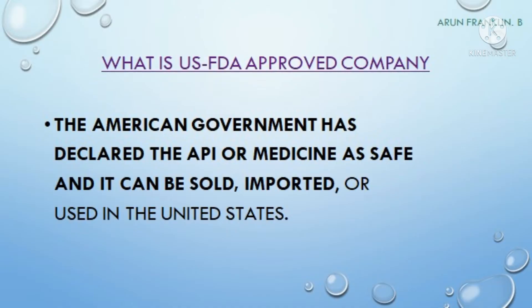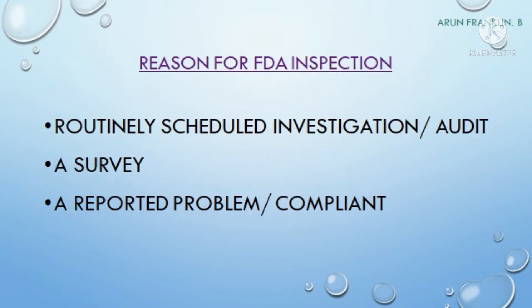When we say a USFDA-approved pharma company, it means the American government has declared the API or medicine is safe and it can be sold, imported, or used in the United States. So if a company is called an FDA-approved company, those companies can manufacture and sell the drugs or market their pharmaceutical products in the United States of America.